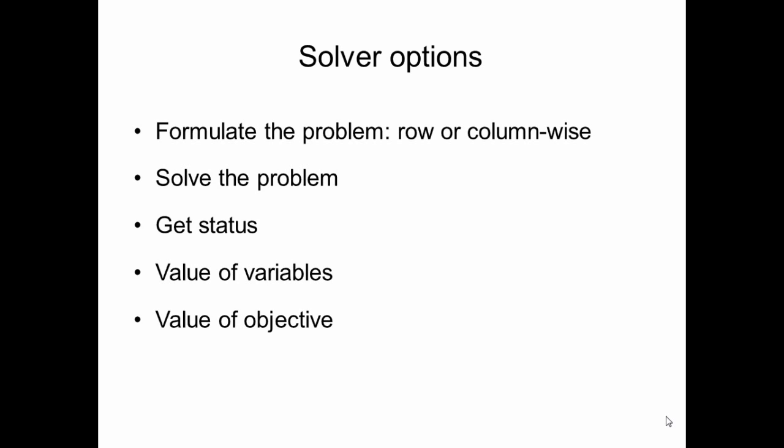After solving the formulated model, we first check the status of the solution—i.e., optimal, infeasible, unbounded, etc.—and take necessary actions. If the status is optimal, we find the value of decision variables and the objective.